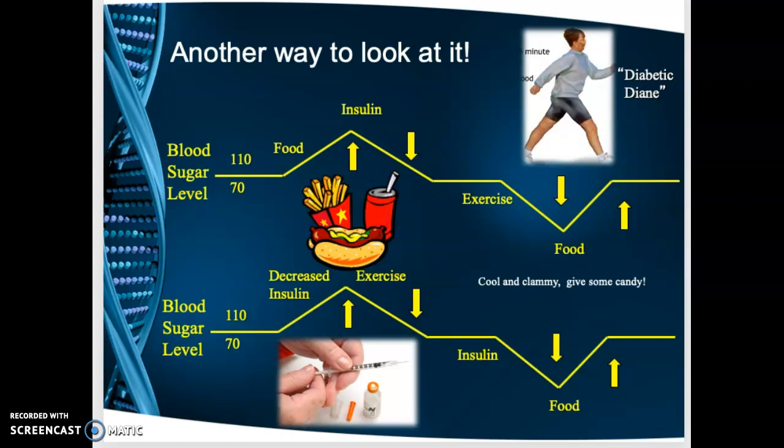Diane eats breakfast — blood sugar goes up. She gives herself an insulin injection — blood sugar starts going down. She then exercises — blood sugar goes down further. She becomes cool and clammy, eats some candy as the doctor advised — blood sugar comes back up. This illustrates how food, insulin, and exercise interact to regulate blood sugar.